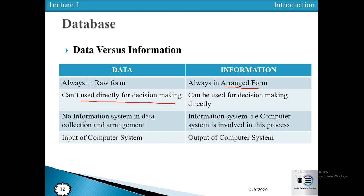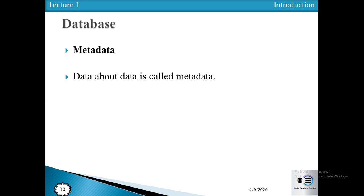For information systems: when collecting data we don't necessarily need information systems, but for producing information, computer systems process different types of data. Data is usually the input of the computer system and information is the output of the computer system.